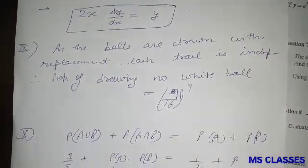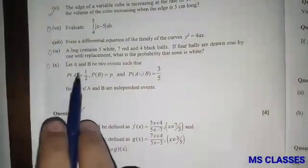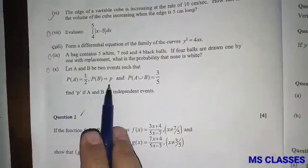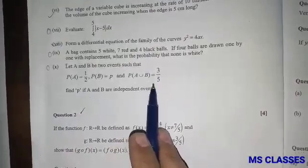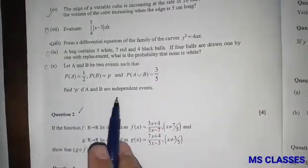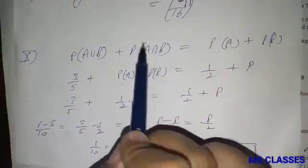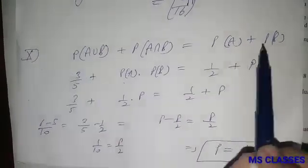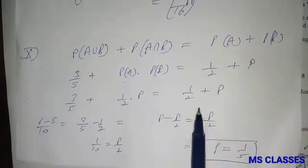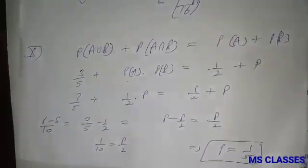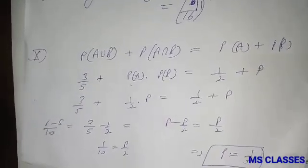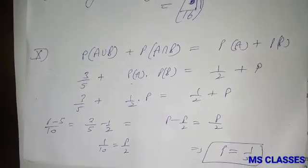Let A and B be two events such that probability of A is one-half, probability of B is p, and A union B is 3 by 5. Find p if A and B are independent events. Since A and B are independent, p of A intersection B is p of A into p of B. Since all values are given, after putting the values we get p as 1 by 5.